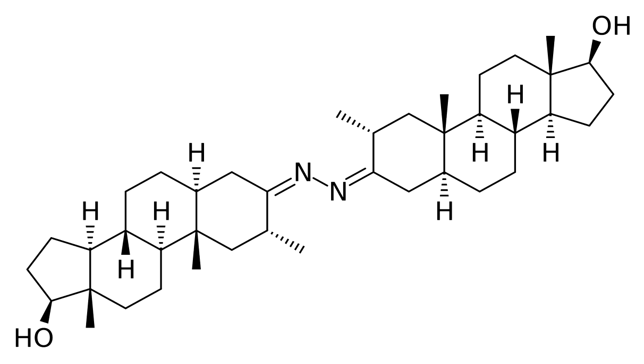Bolazine has a unique and unusual chemical structure, being a dimer of drostanolone linked at the C3 position of the A-ring by an azine group, and reportedly acts as a prodrug of drostanolone.